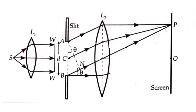Now let us consider any random point P on the screen. The light goes and gets focused at this point P as well. However, the light going out of point A and the light going out of point C have not traveled the same distance — the light from point C has traveled an extra path, so there is a path difference coming into the picture.